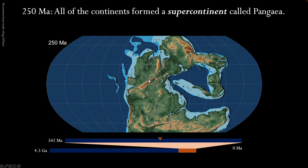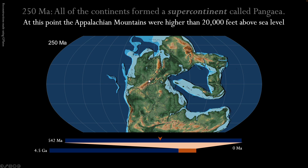250 million years ago, all of the continents collided together, forming a supercontinent called Pangaea. At this point, the Appalachian Mountains — including the hills around Amherst that you can see from the windows in the Mineski Museum — were as tall as the Himalaya are today, nearly 20,000 feet above sea level.